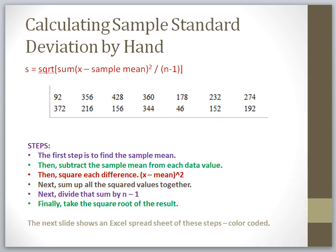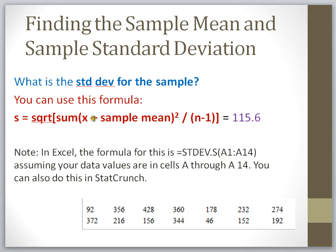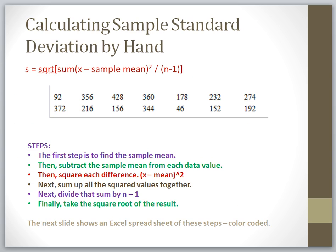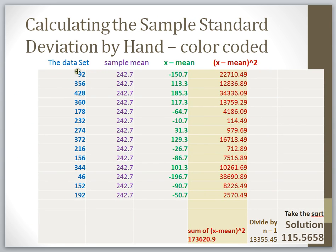To recap the formula: first subtract the sample mean from each value of x — done. Then square each of those remaining values — done. Next, add all those squared values together. Here are the differences: 92 minus 242.7 is minus 150.7, and so on. Here are the squares of each difference. Adding them all together gives a large sum, which I then divide by N minus 1, and finally take the square root — giving a final sample standard deviation of approximately 115.6.